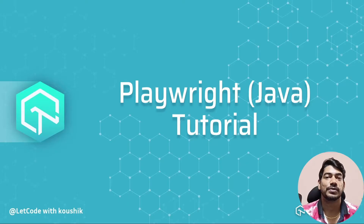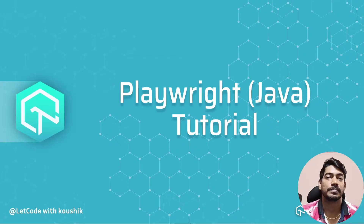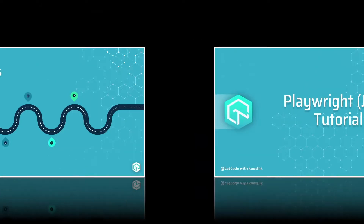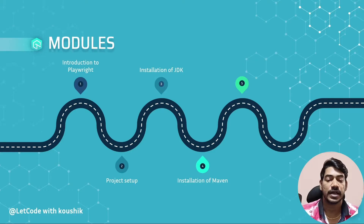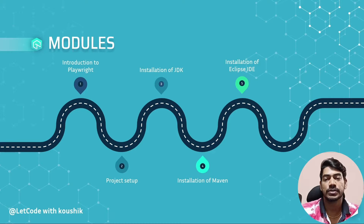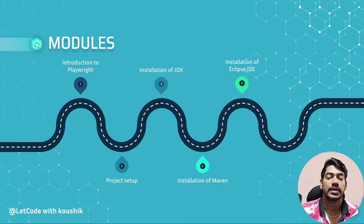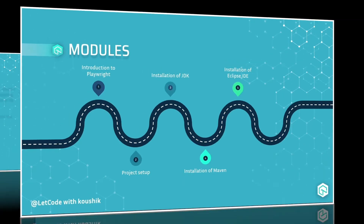Hey guys, my name is Kaushik and welcome back to LambdaTest. We have already learned Selenium with Java and Playwright with TypeScript. Now we are going to learn Playwright with Java binding. In this video we'll cover a basic introduction to Playwright, then set up the project by installing JDK, Maven, and Eclipse IDE. You can also use IntelliJ, but throughout the playlist I'll go with Eclipse.